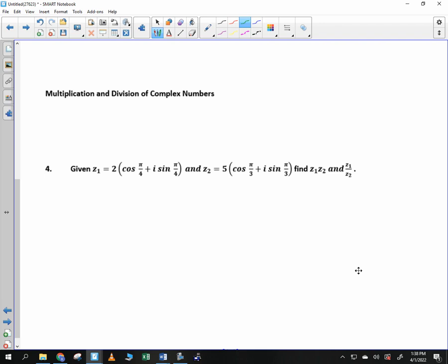Ready? Today, we are going to multiply and divide complex numbers, and we are going to write these numbers as follows. Suppose that Z sub one is in trigonometric form, and that trigonometric form is r sub one times cosine of theta sub one plus i sine of theta sub one. And Z sub two is equal to r sub two times cosine of theta sub two plus i sine of theta sub two.